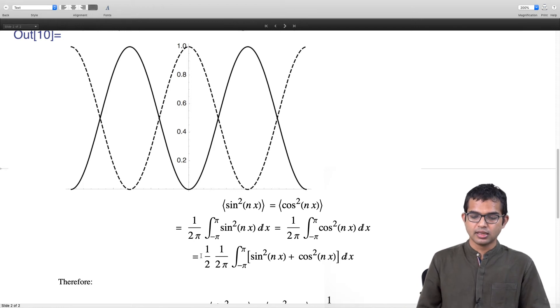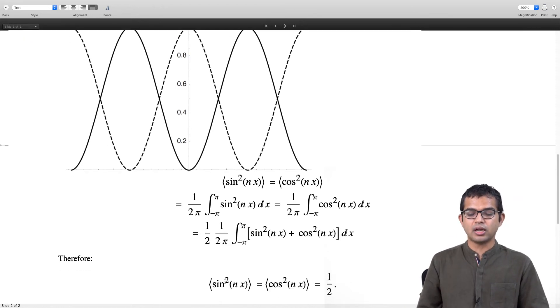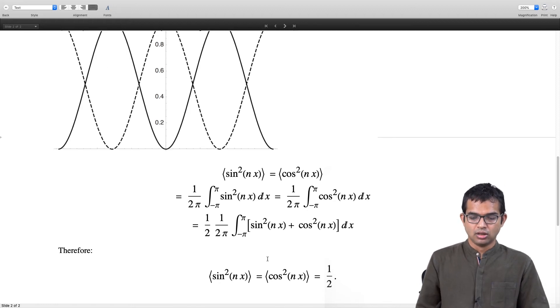But this quantity is nothing but 1. Therefore, I am going to get just a half. The average value of sin²(nx) is half, as long as you have taken the average over a multiple of the period of this function.